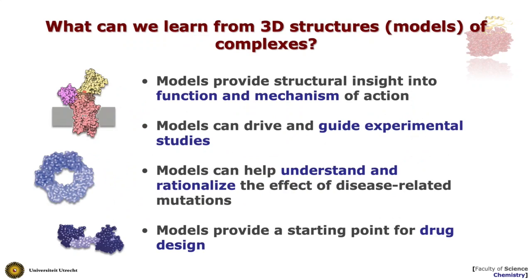Docking in general and integrative modeling in particular are going to give you 3D models of complexes. They have their limitations, but models are already useful because they might provide insight into function and mechanism of action of those complexes. With this insight you can try to design experiments and test if the hypothesis generated from the model are valid or not. Models can also help you understand the effect of disease-related mutations in the context of interactions, and they are also the starting point for drug design — to prevent binding or restore binding when things do not work properly.